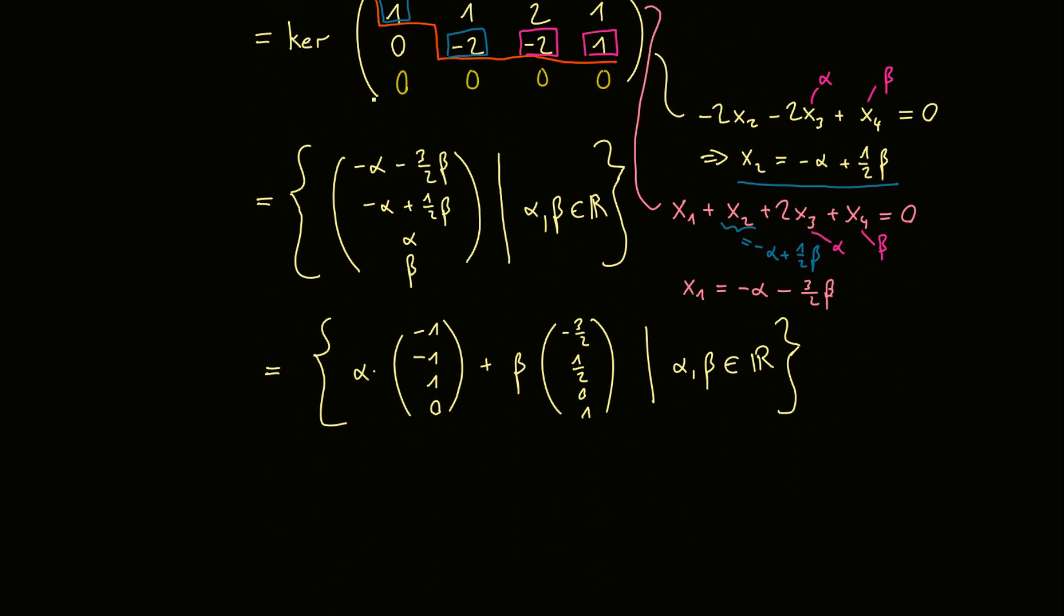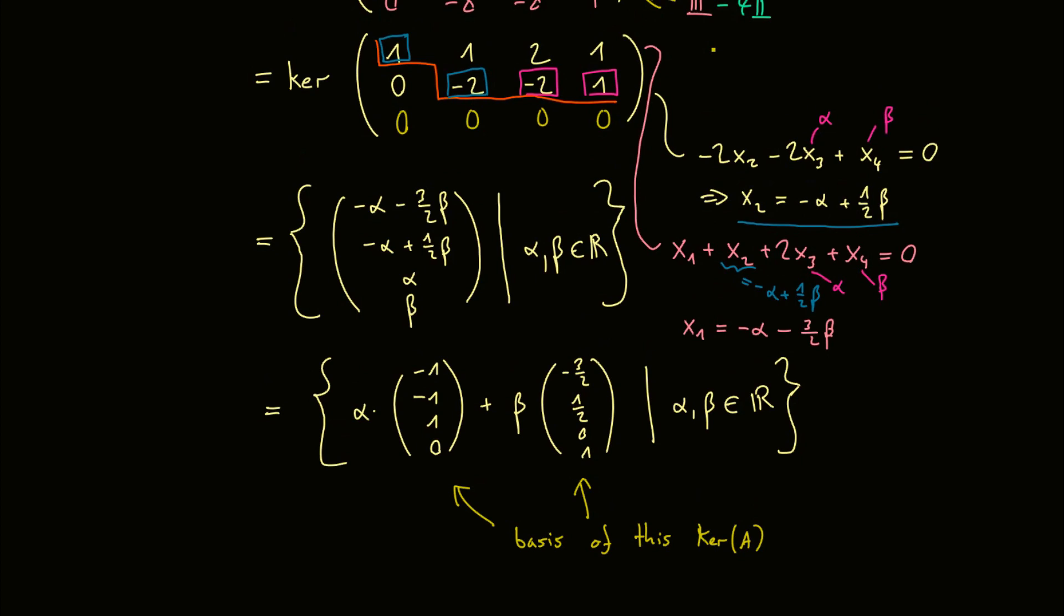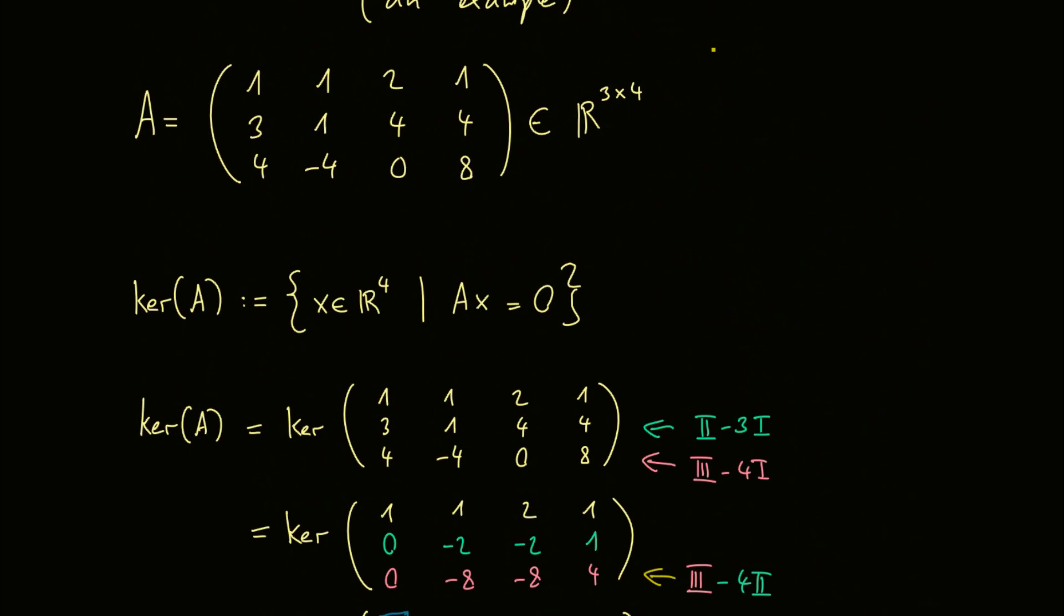And by our calculation we know that these two vectors here are linearly independent, and therefore build a basis of the kernel of this kernel of A. That means for this example the kernel is a two-dimensional subset of R4.